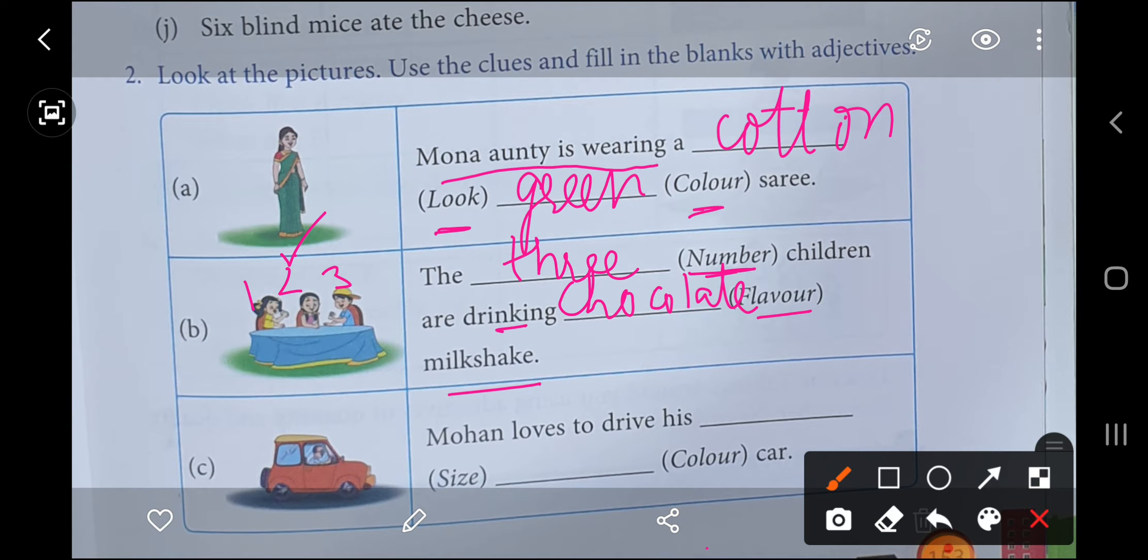Next one is, Mohan loves to drive his size. Now looking at this, what size do you think? It looks small, the car, so we will write small. If it was big, you could write big. Color - what is the color of this car? This looks red to me, also looks orange. So I am going to write red color. Red, okay? Red color car.